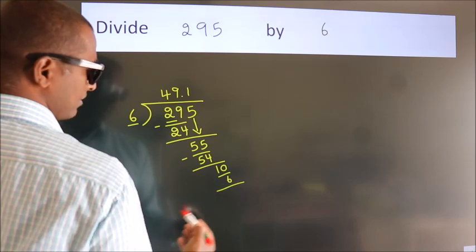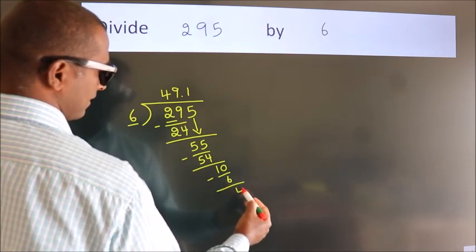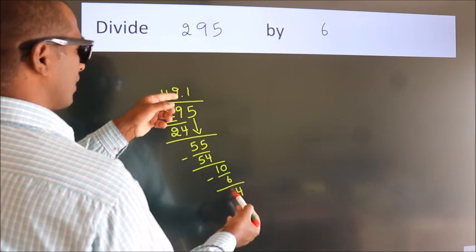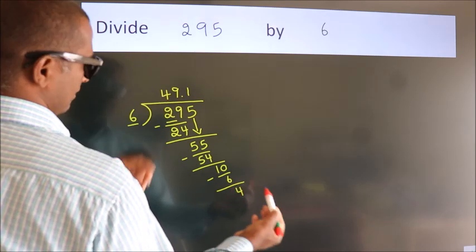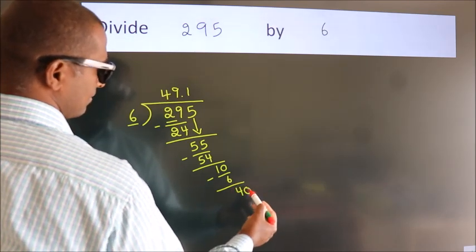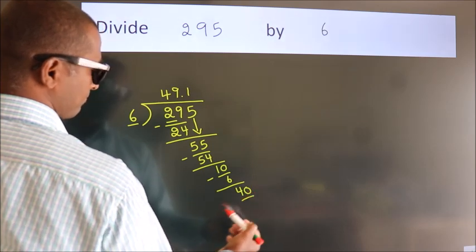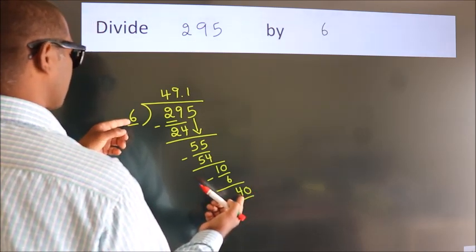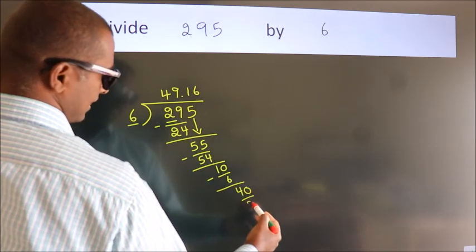Now we subtract. We get 4. After this, we already have the decimal, so directly take 0. So 40. A number close to 40 in the 6 table is 6 sixes, 36.